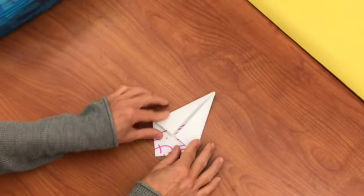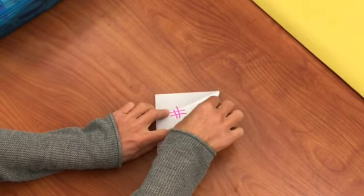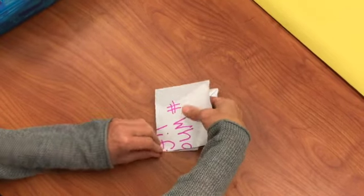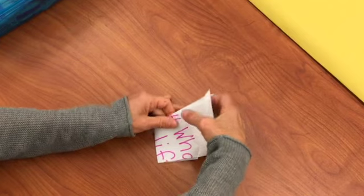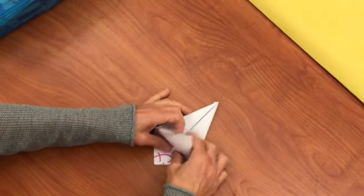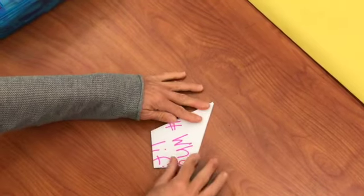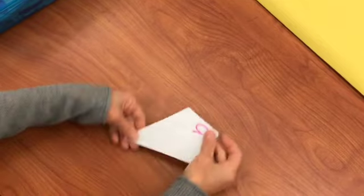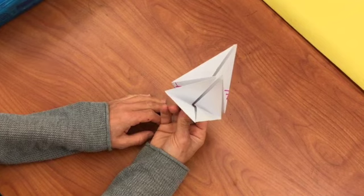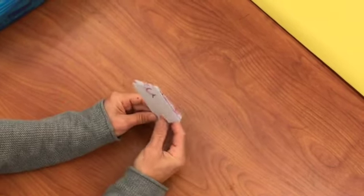Flip it over and do the same thing on this side. So unfold, lift up that top layer, and reverse the folds on each side. Now, it looks like a kite. One side has all of those open flaps of paper. The other side is closed.